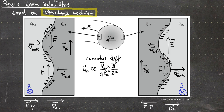The low field side is therefore called the bad curvature region, while the high field side is the good curvature region. This is the interchange mechanism.